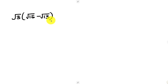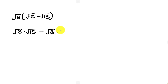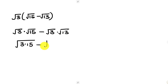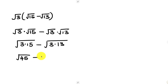Now let's expand this bracket by distributing the square root of 3 inside. So this becomes the square root of 3 times the square root of 15, minus the square root of 3 times the square root of 13. This expression can be simplified into the square root of 3 times 15, minus the square root of 3 times 13. So simplifying further, this becomes the square root of 45 minus the square root of 39.